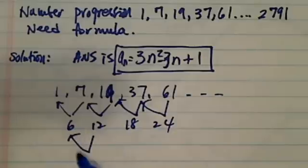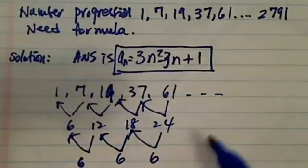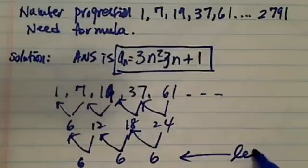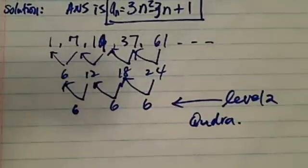And do it one more. We're checking to see what the order for the formula is. 6 here, 6 here, 6 here. Since this is the second level, we know we have a quadratic formula for the solution.